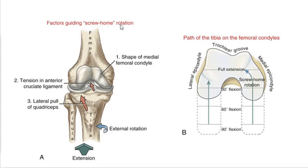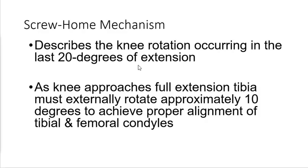This mechanism is called the screw home rotation, and it happens in the last 20 degrees of extension — approximately 10 degrees of external rotation to lock it. If you're sitting in a chair and you lock out your knee, you'll notice your foot turns out a little bit as you do that — just 5 to 10 degrees of external rotation. And in order to bend your knee from full extension, there's a little bit of internal rotation that needs to happen first to unlock the knee and accommodate the condyles. That's called the screw home mechanism.